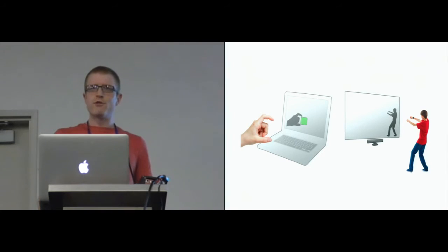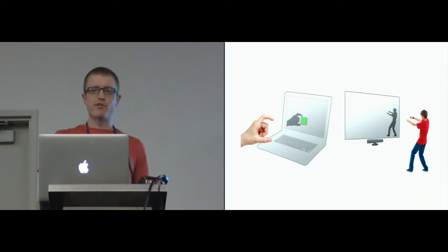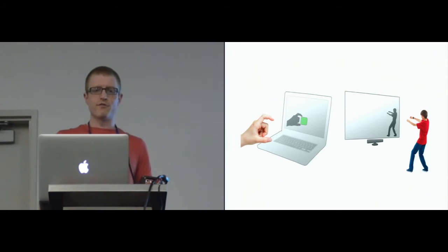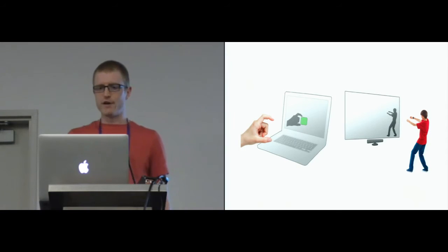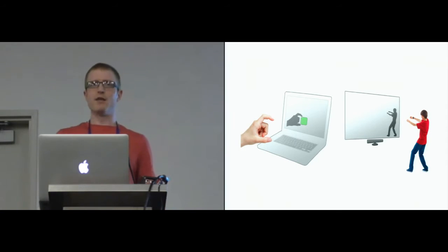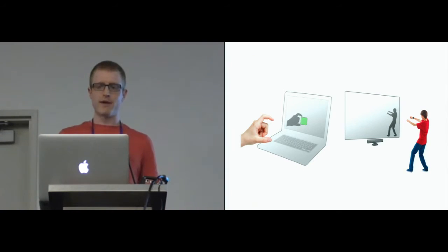One way to overcome these problems is by giving users feedback. A common way of doing this is to visualize what the sensors can see on screen, like shown there. The user might see a silhouette of their hand or body, which they can use to adapt how they gesture. For example, if they weren't gesturing in a good place, they might move their position in front of the sensor so that their movements are more likely to be picked up.